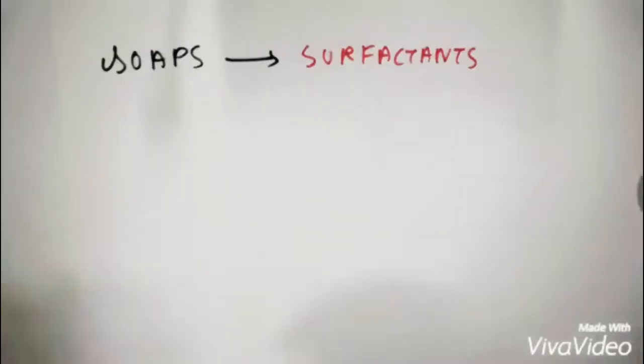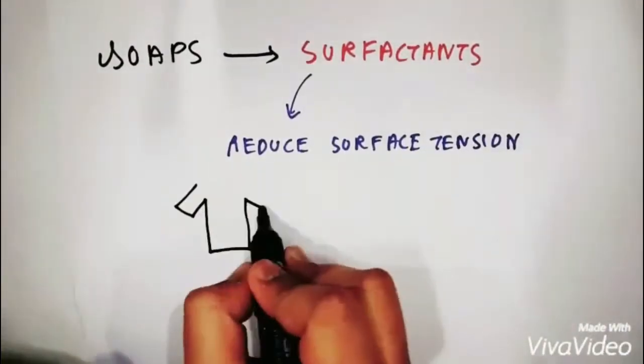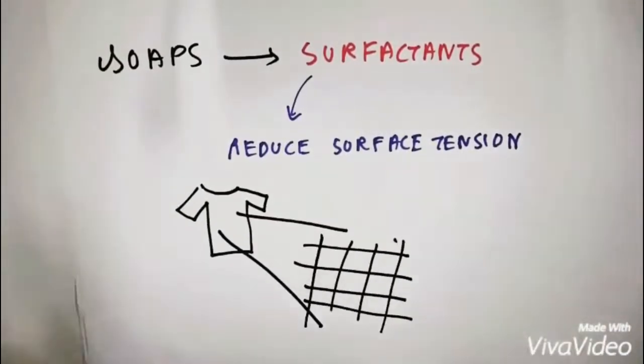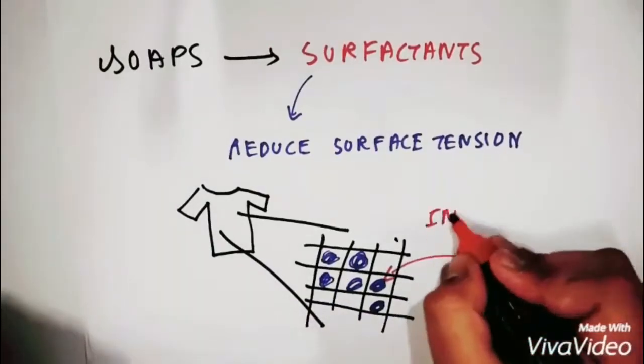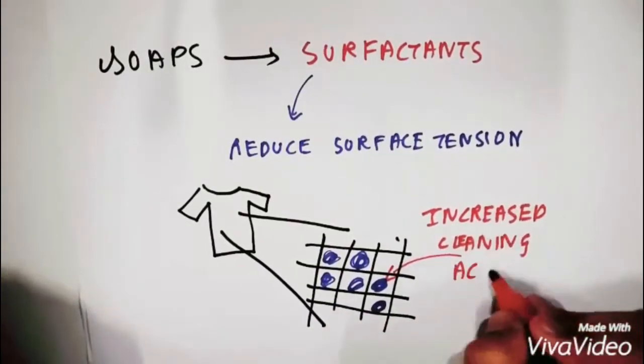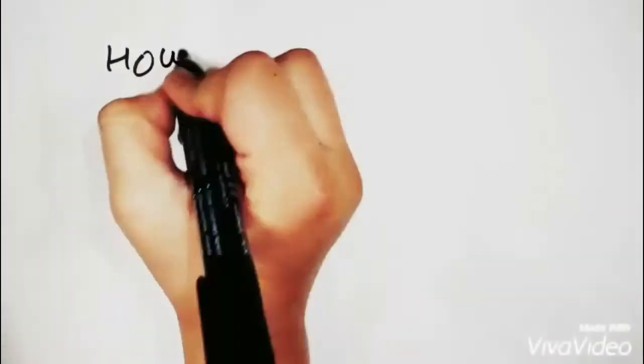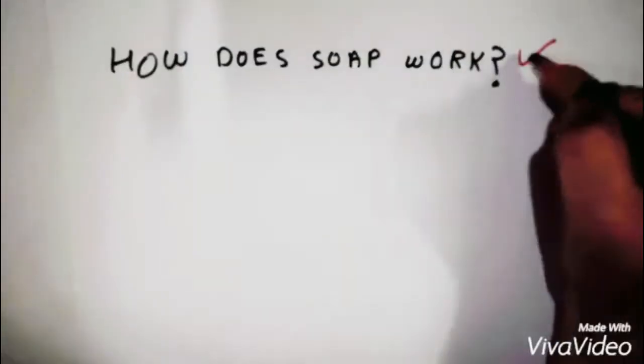Soaps also act as surfactants. That is, they reduce the surface tension of water by acting as an impurity so that the water can seep into the small crevices of your fabric for increased cleansing action.